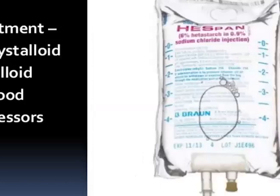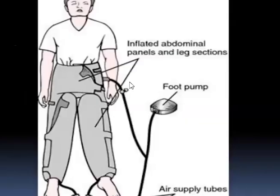When blood pressure drops to around 60/40 mmHg, this is not compatible with life. Treatment includes crystalloid and colloid solutions and isotonic saline infusion to maintain blood pressure. Raising the patient's legs — using foot pumps and air supply tubes — redirects more blood toward the heart, helping maintain cardiac output. These are different devices used to maintain blood pressure in shock.